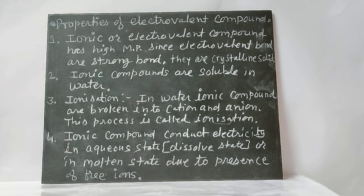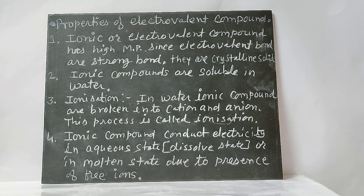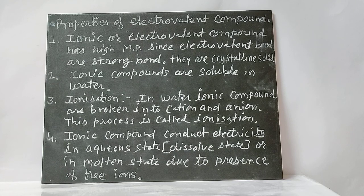Properties of electrovalent compounds: ionic or electrovalent compounds have a high melting point. Since electrovalent bonds are strong, these compounds exist as crystalline solids. Ionic compounds are soluble in water; in water, ionic compounds break into cations and anions, a process called ionization. Ionic compounds also conduct electricity in aqueous state or in molten state due to the presence of free ions.